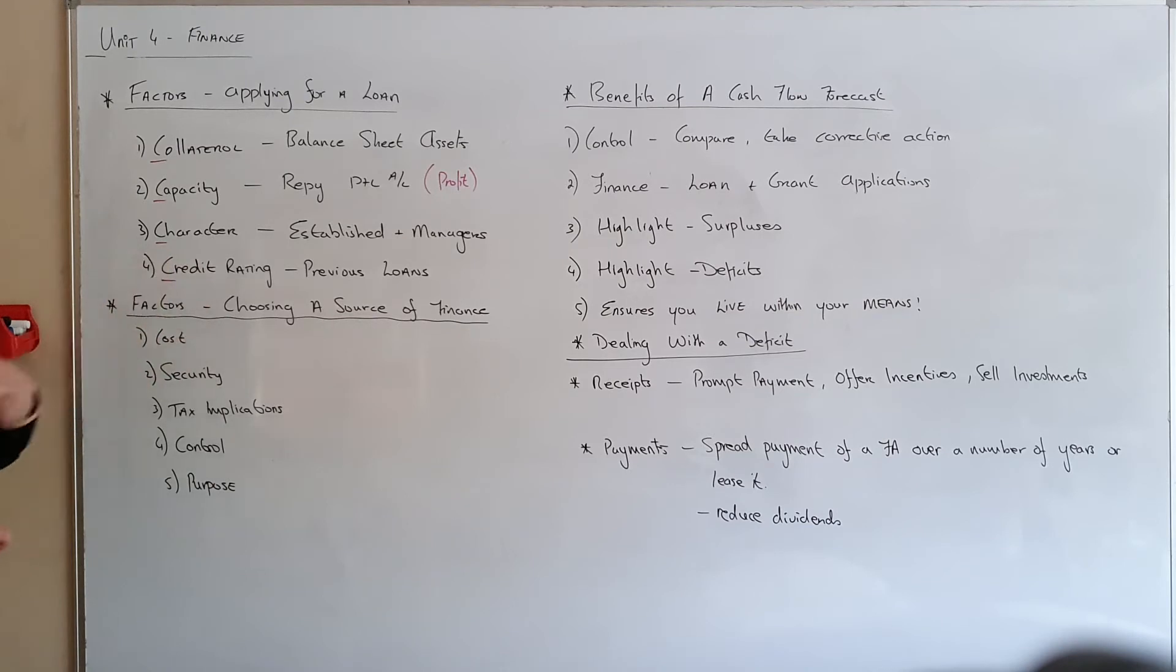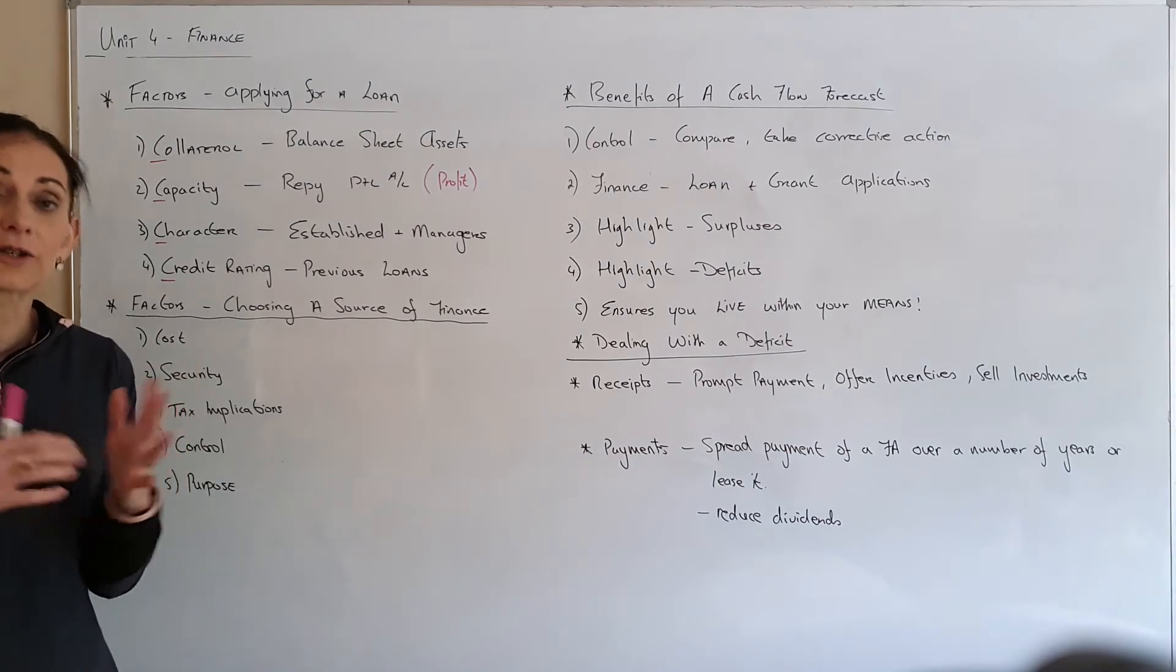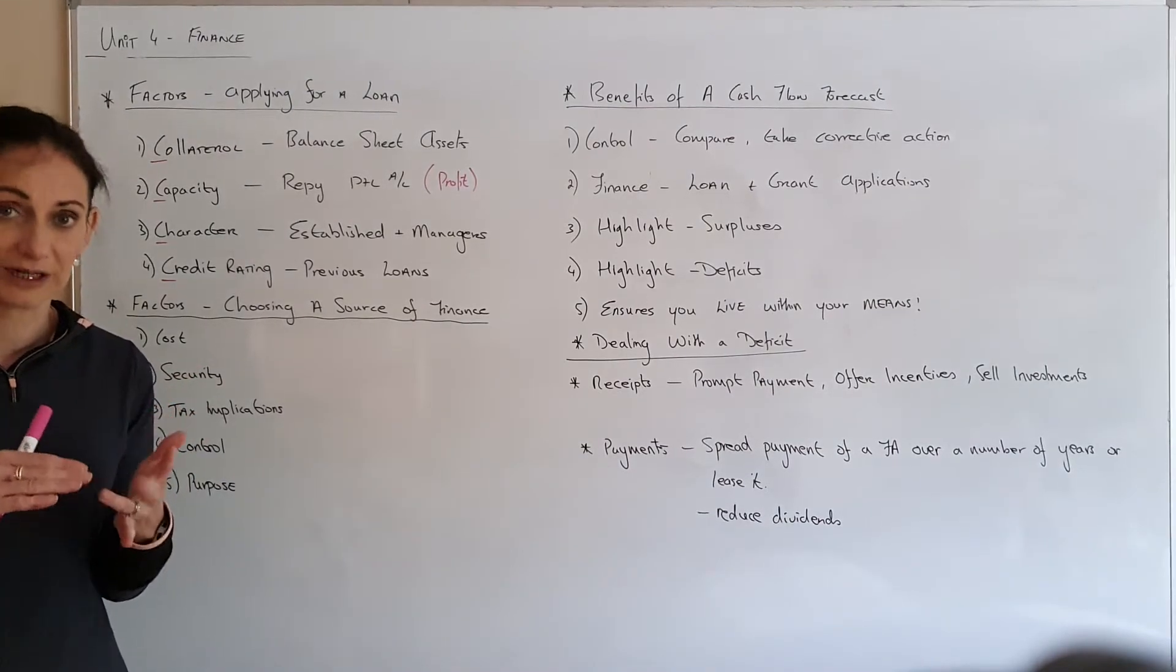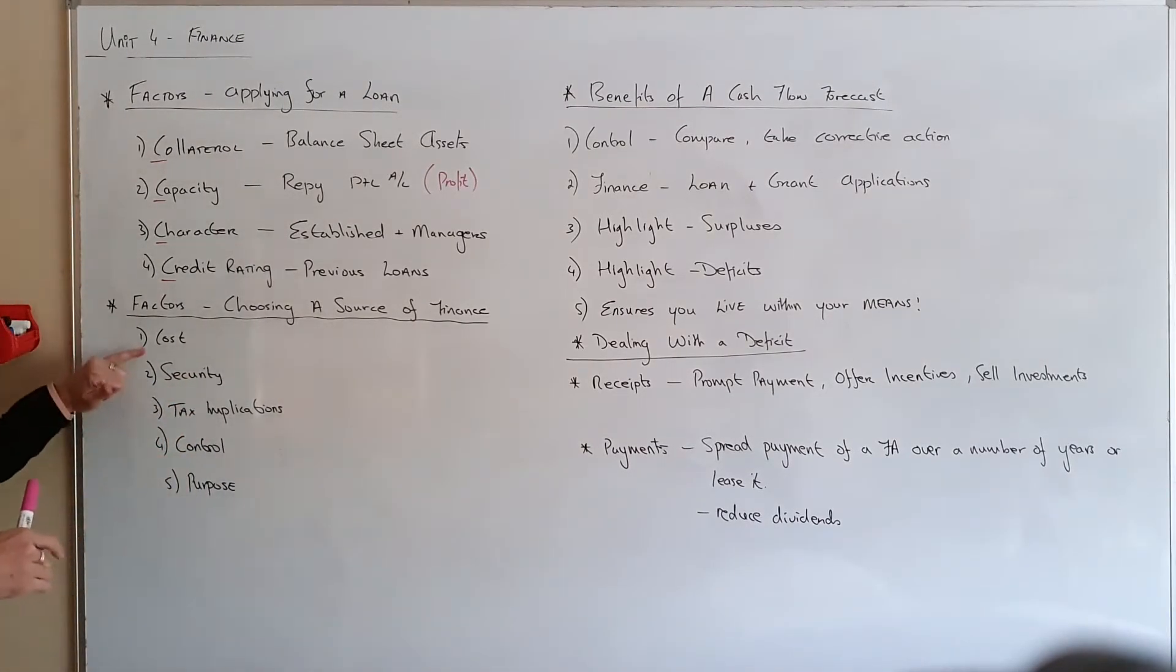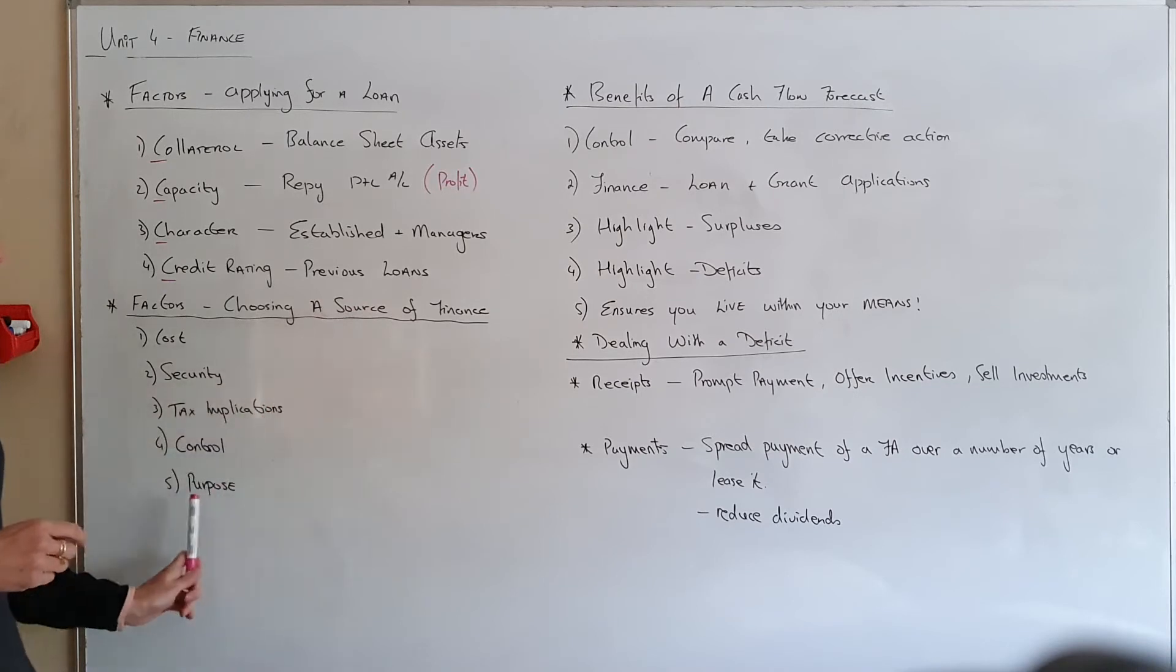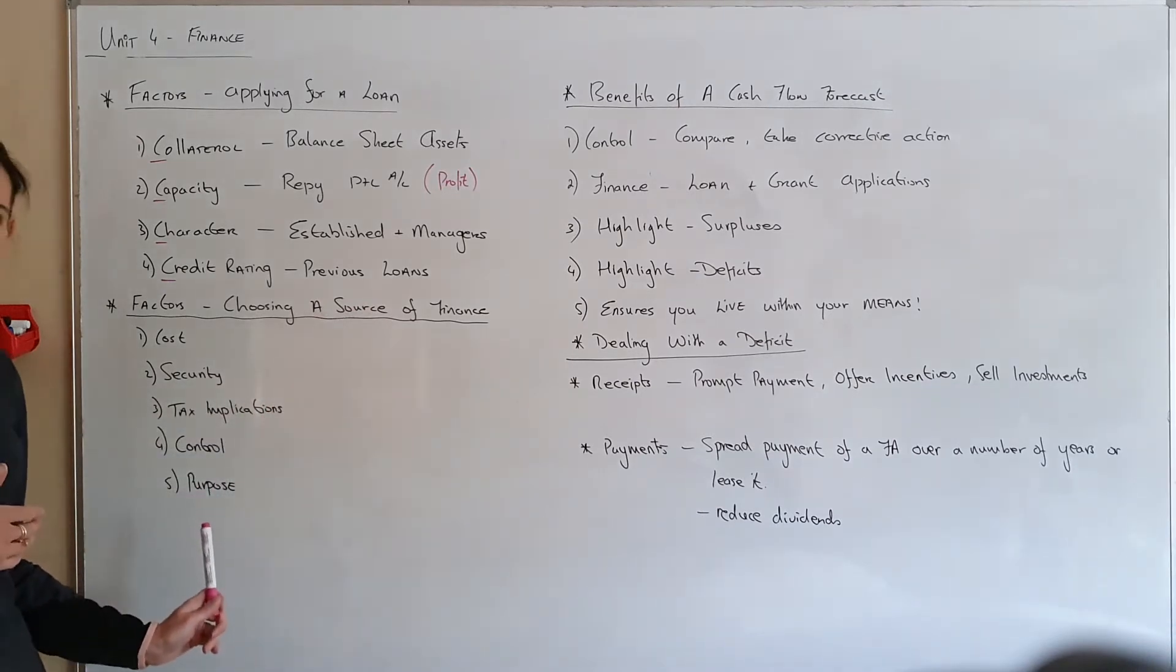This section on factors choosing the source of finance covers five areas that I looked at when comparing short, medium, and long-term sources. You'd look at the cost, whether they require security or collateral, tax implications, whether they affect control of your business, and obviously the purpose of the loan. If the purpose is less than a year: short term; one to five years: medium term; or greater than five: long term.